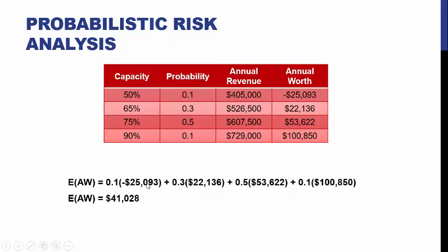Note that there is no single outcome where you actually earn exactly $41,000 — this is a weighted average. If you were to run this a hundred times, build a hundred different plants all with the same associated probabilities, on average you would make $41,000. This value shows that we are still expected to make money, because there is a 90% chance that we earn money and only a 10% chance that we lose money. On a given run, we would expect to make $41,028.